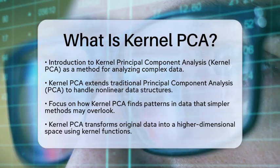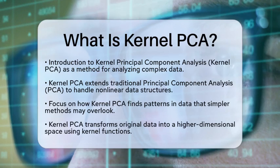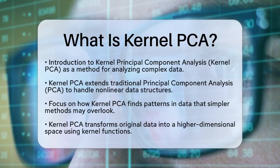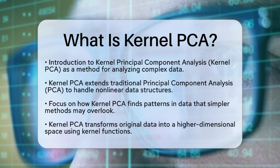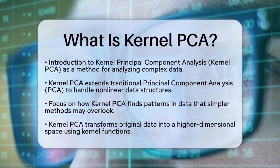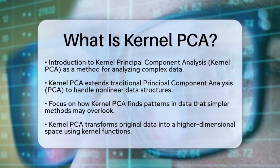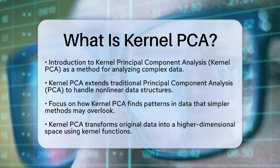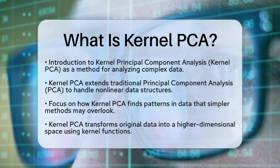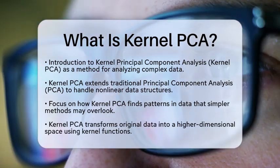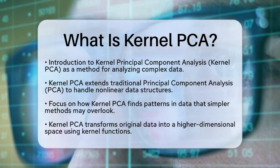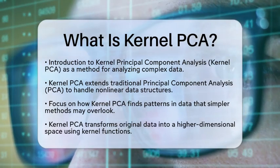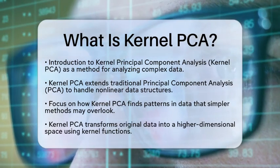So, how does Kernel PCA work? It starts by transforming the original data into a higher-dimensional space using something called kernel functions. This transformation allows us to make nonlinear data become linearly separable. In simpler terms, it helps us rearrange the data so that we can analyze it more effectively.